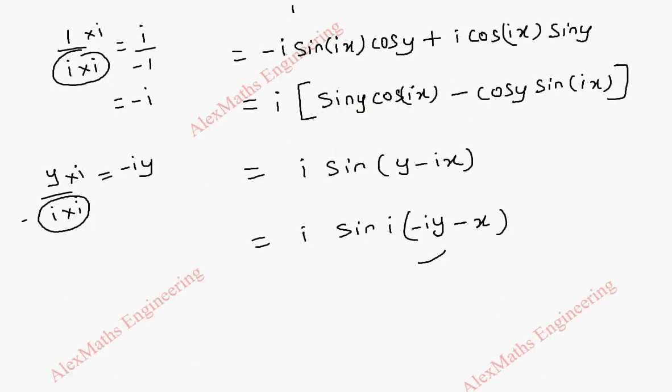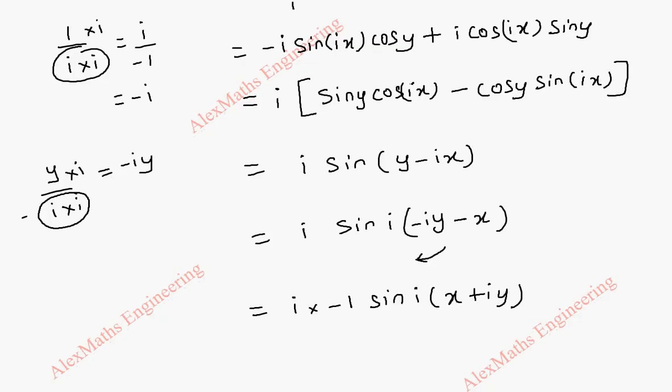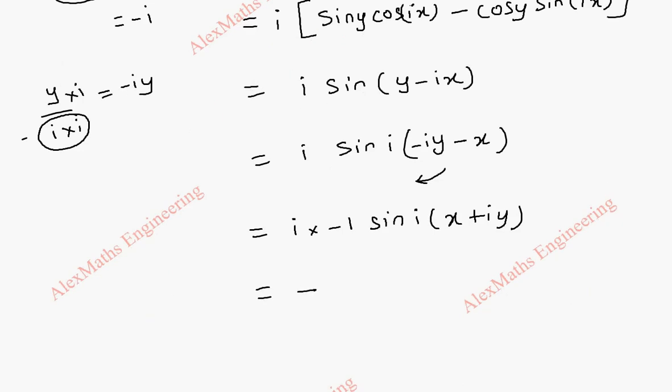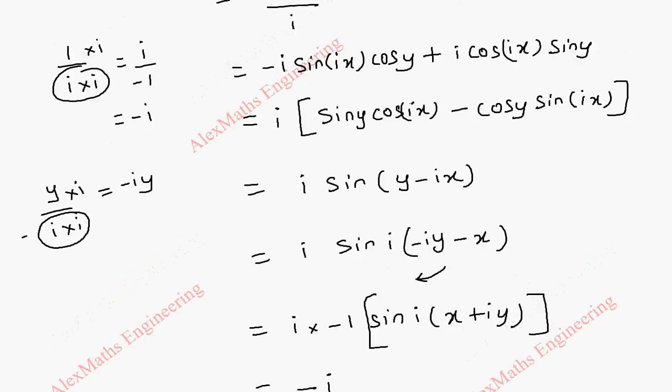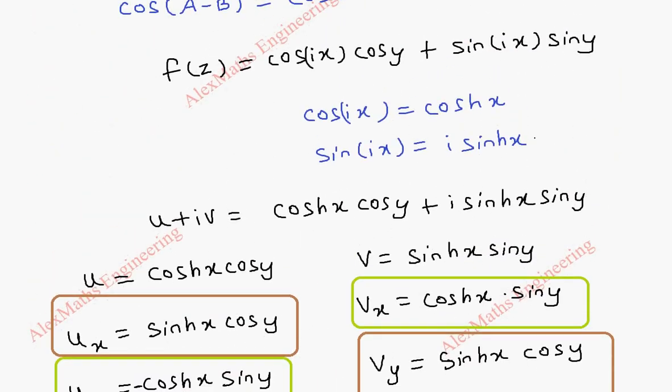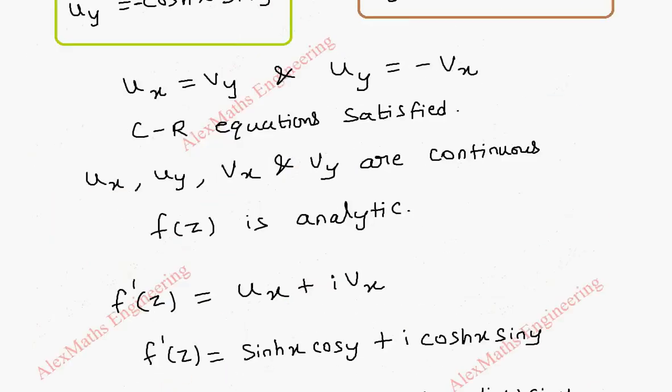So, when I take the minus sign outside, already there is i into minus 1. Then, we have sin of i into, this becomes x plus iy. And outside, we have minus i. Then, this entire term, again already we discussed, sin of ix becomes i sinh x.